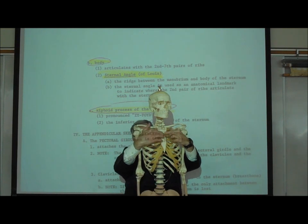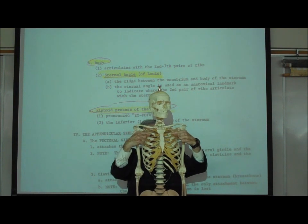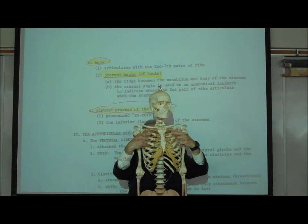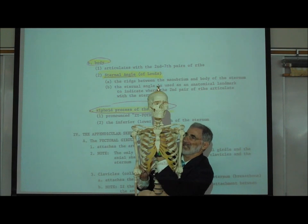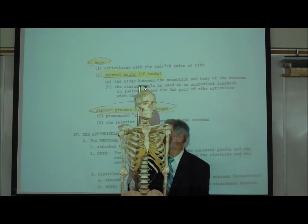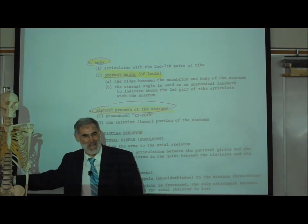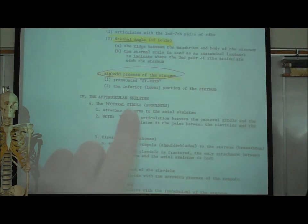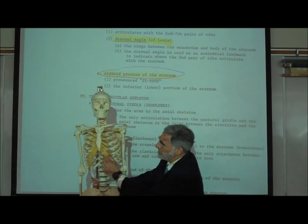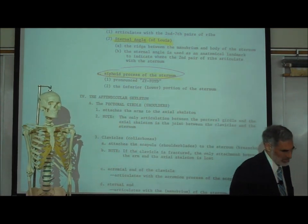The sternal angle or sternal angle of Lewis is another anatomical landmark — a small bump or ridge you can feel on the front of your sternum where the manubrium meets the body. Just lateral to that ridge is the second pair of ribs, which marks the top of the heart. The lower part of the sternum is called the xiphoid process.